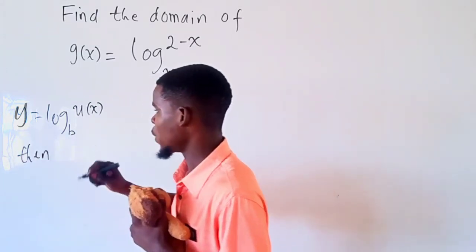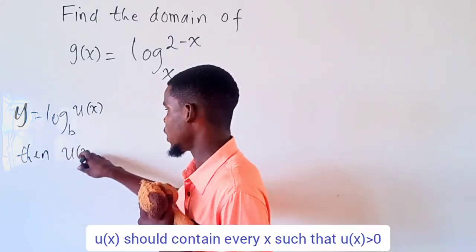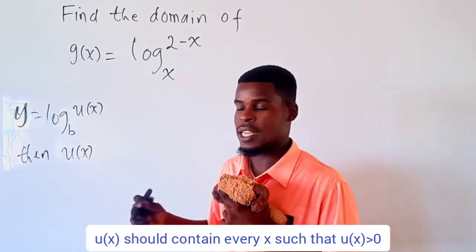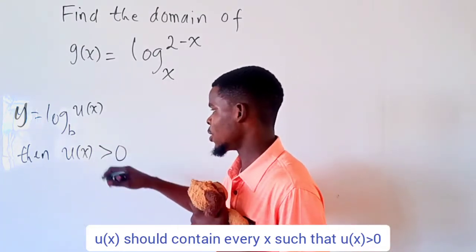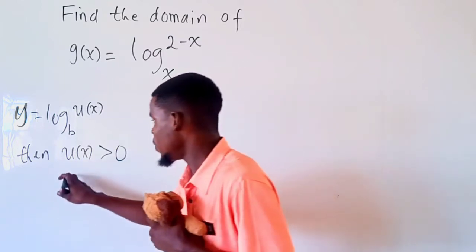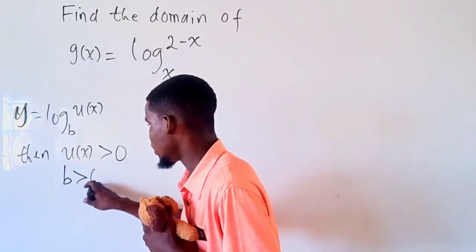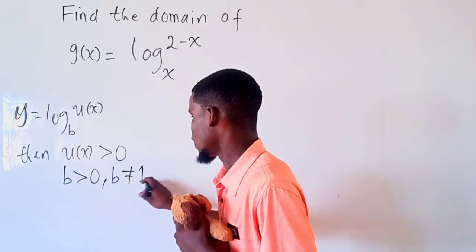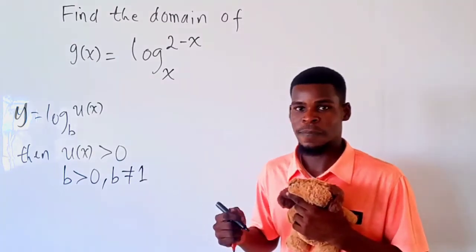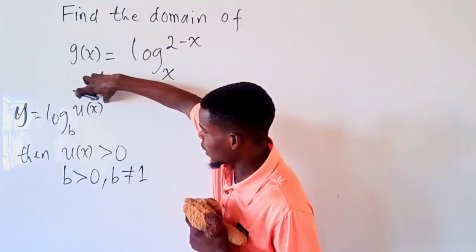we have it that u(x) should contain every function of x such that when evaluated at x, u(x) should be greater than zero, and the base b should also be greater than zero and b should not be equal to one.